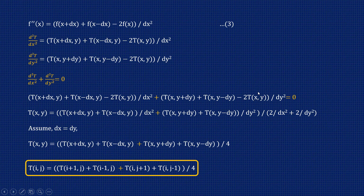Since our governing differential equation is d²T/dx² + d²T/dy² = 0, substituting both expressions and rearranging to isolate T(x, y) on the left-hand side gives: T(x,y) = [T(x+dx, y) + T(x−dx, y) + T(x, y+dy) + T(x, y−dy)] all divided by (2/dx² + 2/dy²) multiplied appropriately. For simplicity, assuming the element size is the same in x and y — that is dx = dy — this simplifies to T(x,y) = [T(x+dx, y) + T(x−dx, y) + T(x, y+dy) + T(x, y−dy)] / 4.